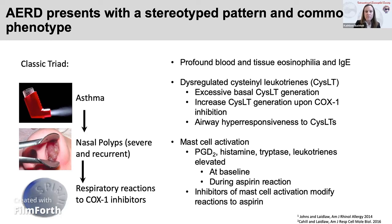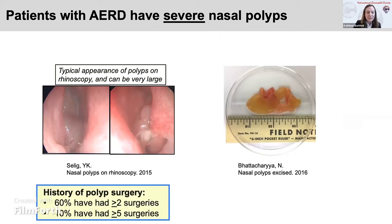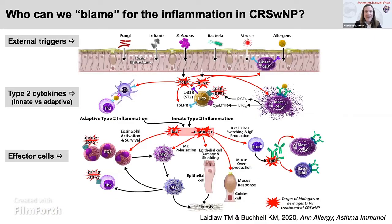Inhibitors of mast cell activation do indeed modify patients' reactions to aspirin and can have some benefit in treating the baseline disease. Patients with AERD have really severe nasal polyps. We have a registry of about 2000 patients at our center who have AERD. When they come to us, 60% have already had two or more endoscopic sinus surgeries. About 10% have had five or more. About 50% of patients report their polyps have regrown in less than six months after surgery, and only 15% of patients have no regrowth at two years. There is a lot of morbidity associated with this disease.